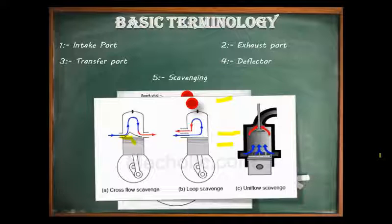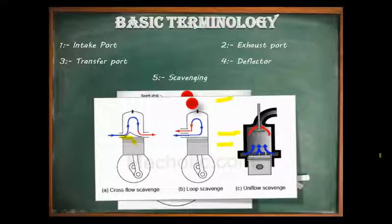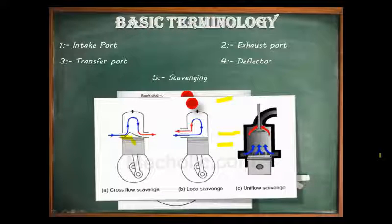Third is uniflow scavenging. In a uniflow engine, the mixture or charged air in the case of diesel enters at one end of the cylinder controlled by the piston, and exits at the other end controlled by an exhaust valve or piston. The scavenging gas flow is therefore in one direction only, hence the name uniflow. This valve arrangement is common in on-road, off-road, and stationary two-stroke engines.